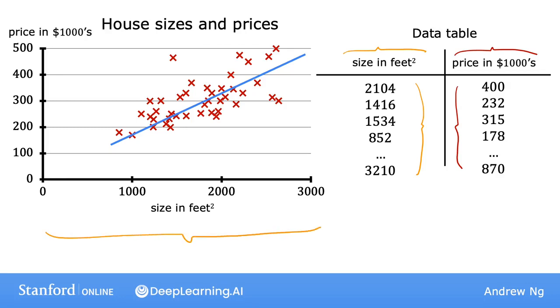Notice that the horizontal and vertical axes correspond to these two columns, the size and the price. And so if you have, say, 47 rows in this data table, then there are 47 of these little crosses on the plot of the left, each cross corresponding to one row of the table. For example, the first row of the table is a house with size 2,104 square feet, so that's around here. And this house sold for $400,000, which is around here. So this first row of the table is plotted as this data point over here.